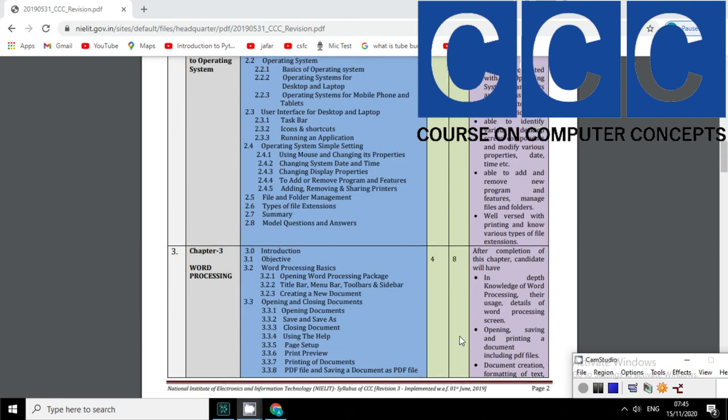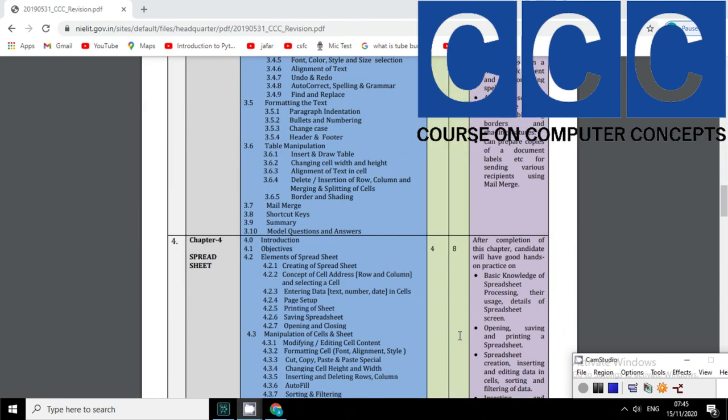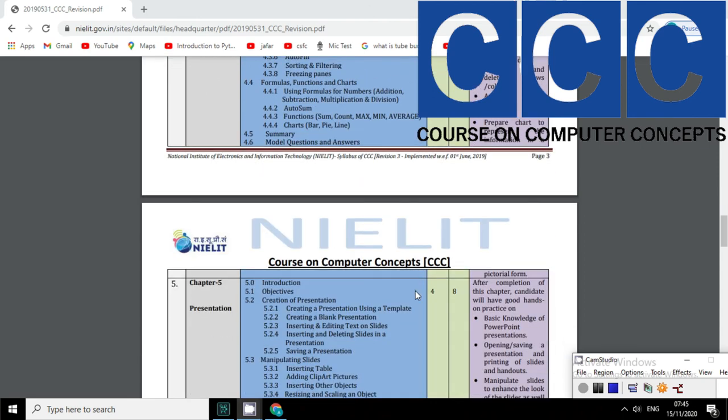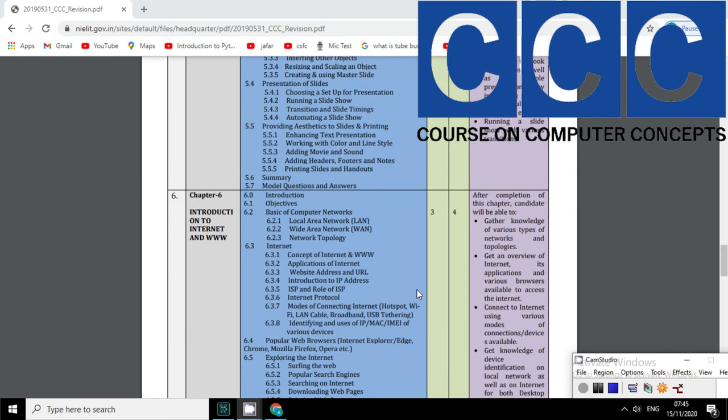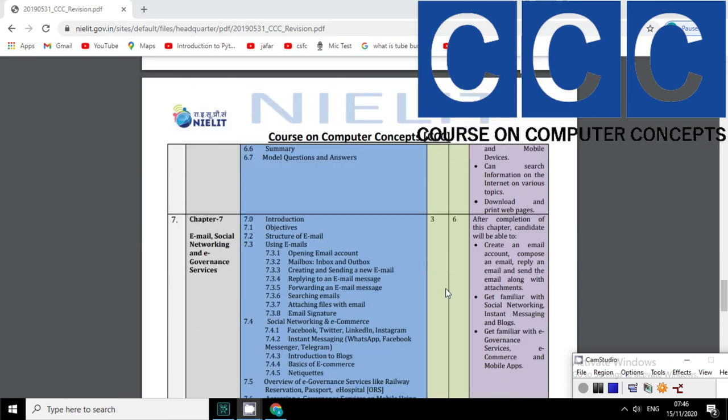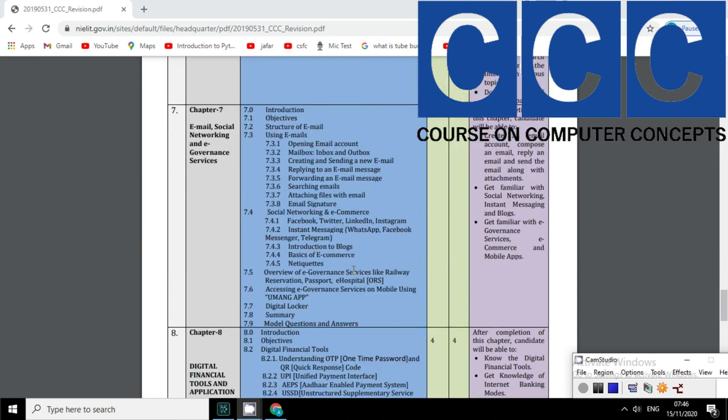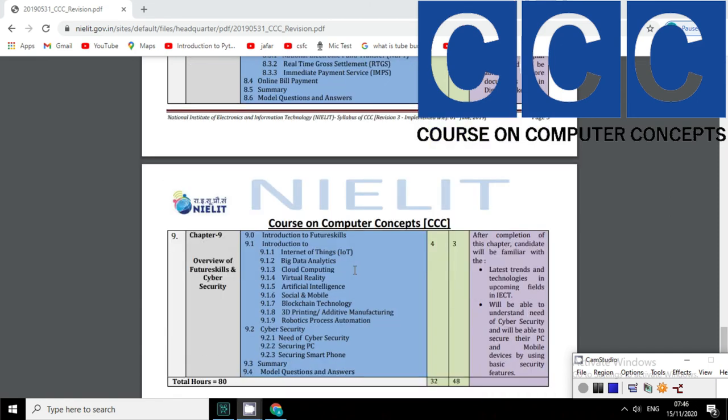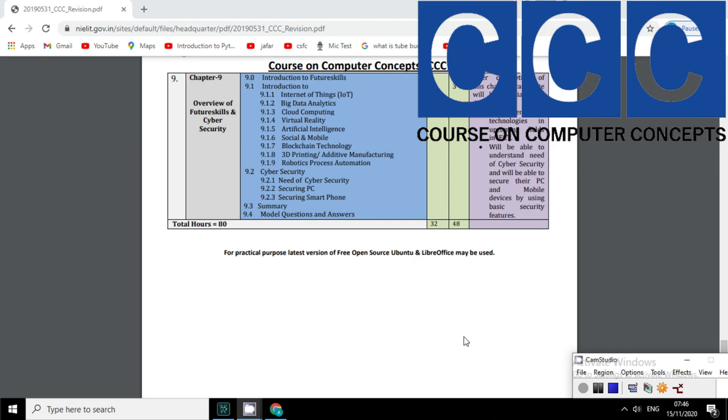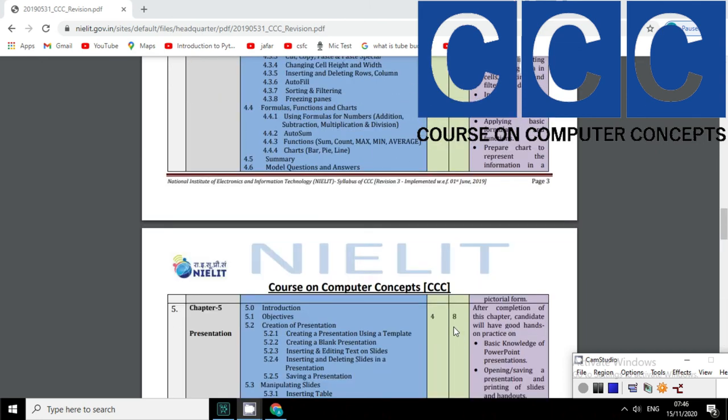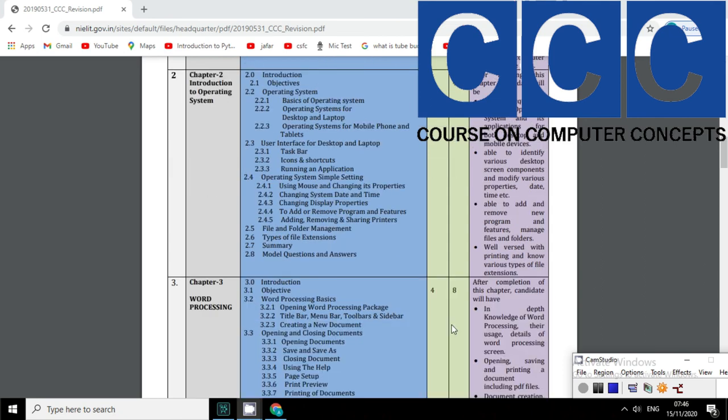Next is Internet. You already know how important is Internet. You will also learn networking, LAN, MAN, WAN, topology, connection, etc. Next is Email. Email is an important service provided by the Internet. Next is Social Networking: Facebook, Twitter, WhatsApp, etc. Next is Digital Financial Tool: Internet banking, wallet, online payment, online ticket booking, etc.